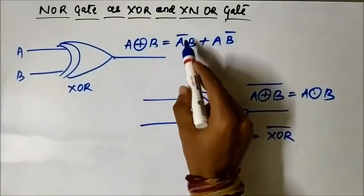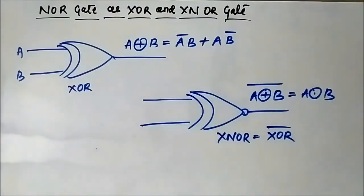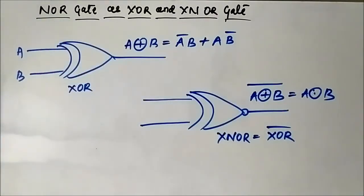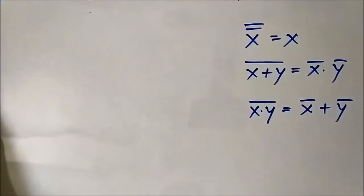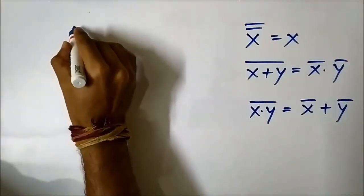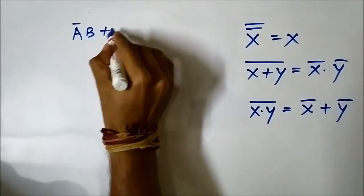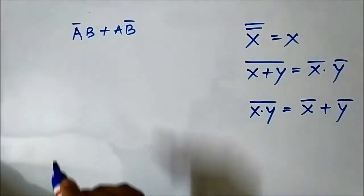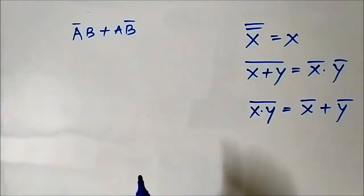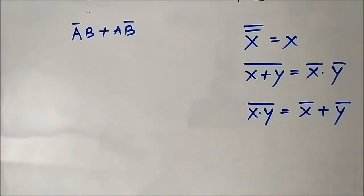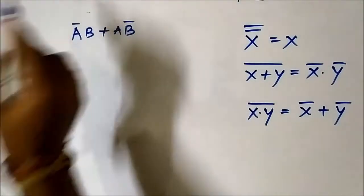We have to use this expression to implement the XOR and the XNOR using a combination of NOR gates. The output of the XOR gate is given and we have to convert it into a form so that it can be easily implemented using NOR gates. We will use the rules of Boolean algebra to modify this expression so that it can be easily implemented using NOR gates.